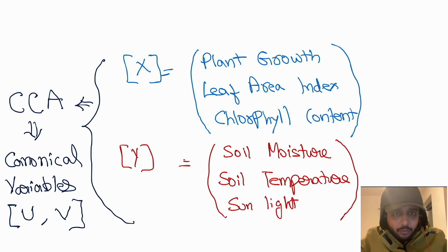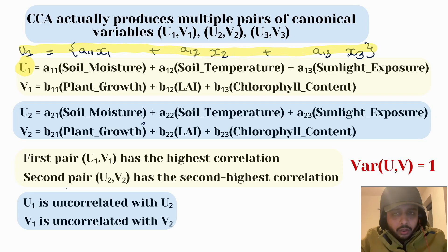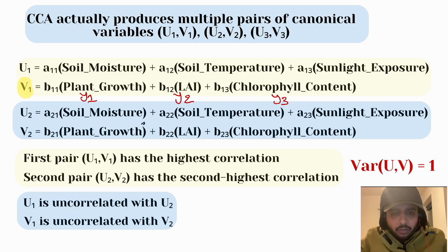What Canonical Correspondence Analysis does is really interesting: it creates new variables called canonical variates. We can think of these as special combinations — a new variable u1 is a linear combination of our x vector (soil moisture, soil temperature, and sunlight exposure) with coefficients a11, a12, and a13. Similarly, we define variable v1 as a linear combination of our biological variables — plant growth, leaf area index, and chlorophyll content.